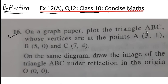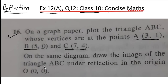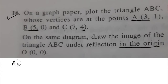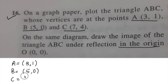On the graph paper we have to plot triangle ABC whose vertices are points A(3,1), B(5,0), and C(7,4). On the same diagram we have to draw the image of triangle ABC under reflection in the origin O.